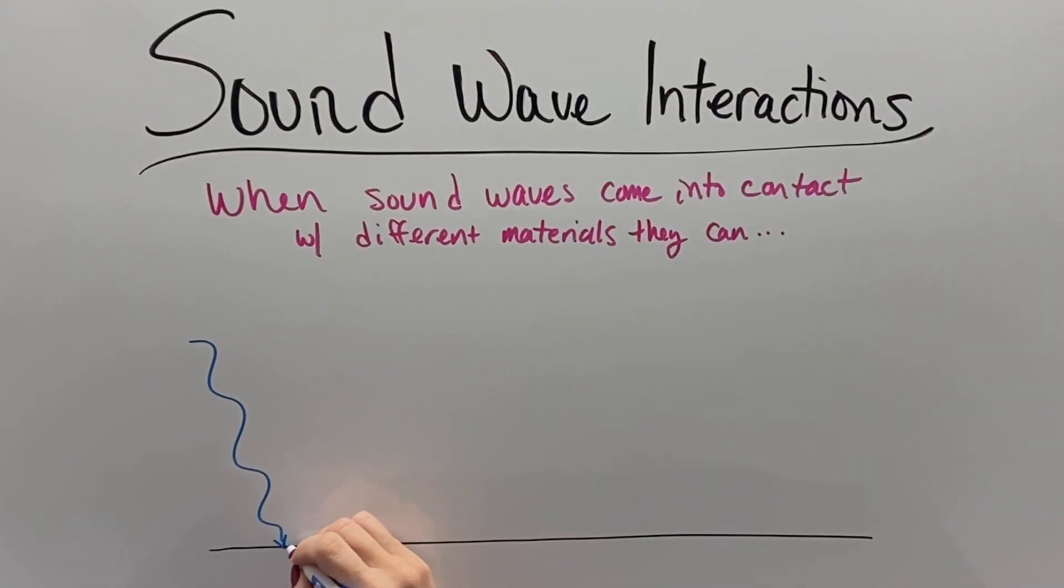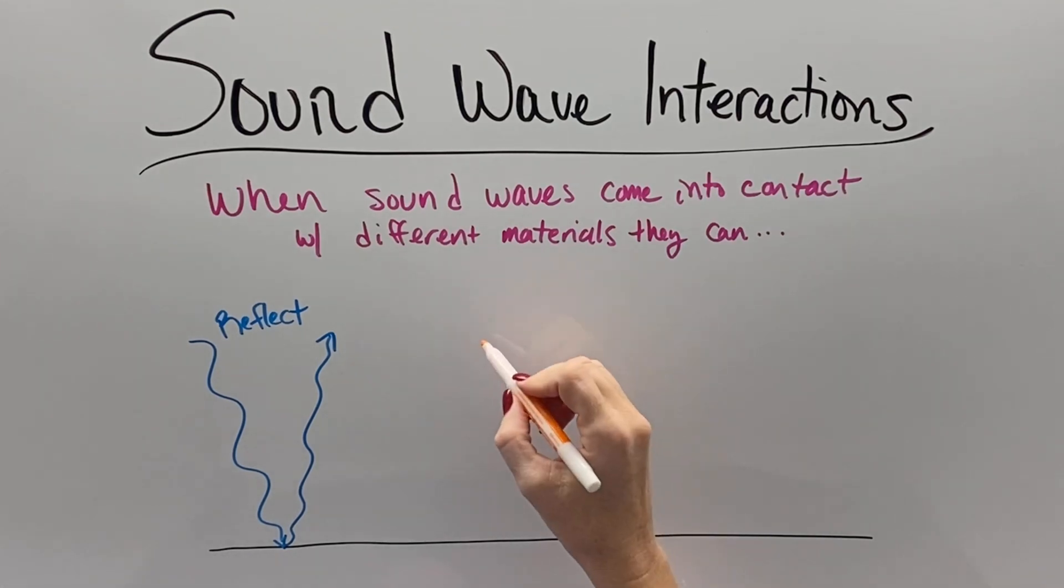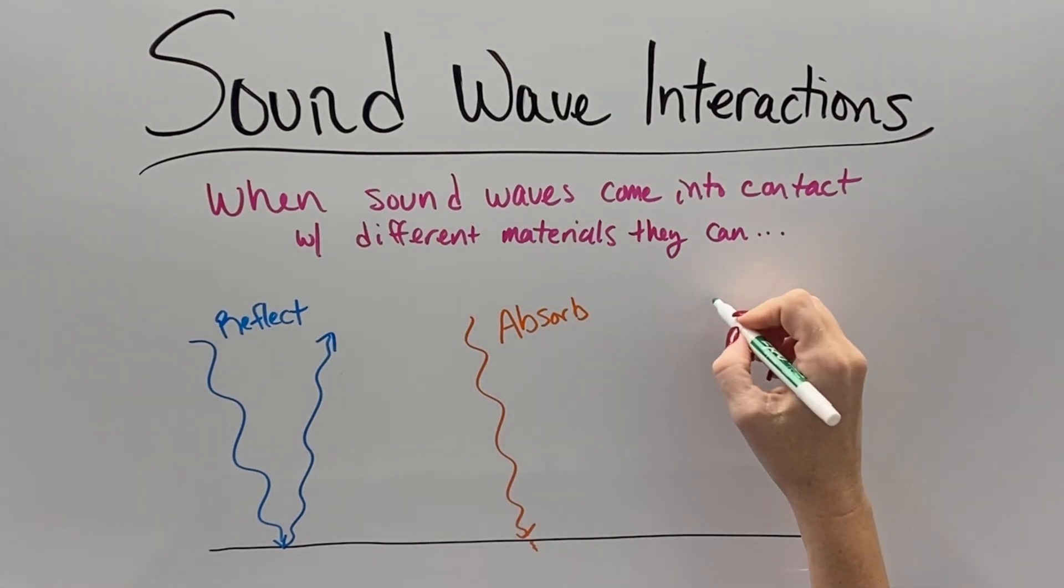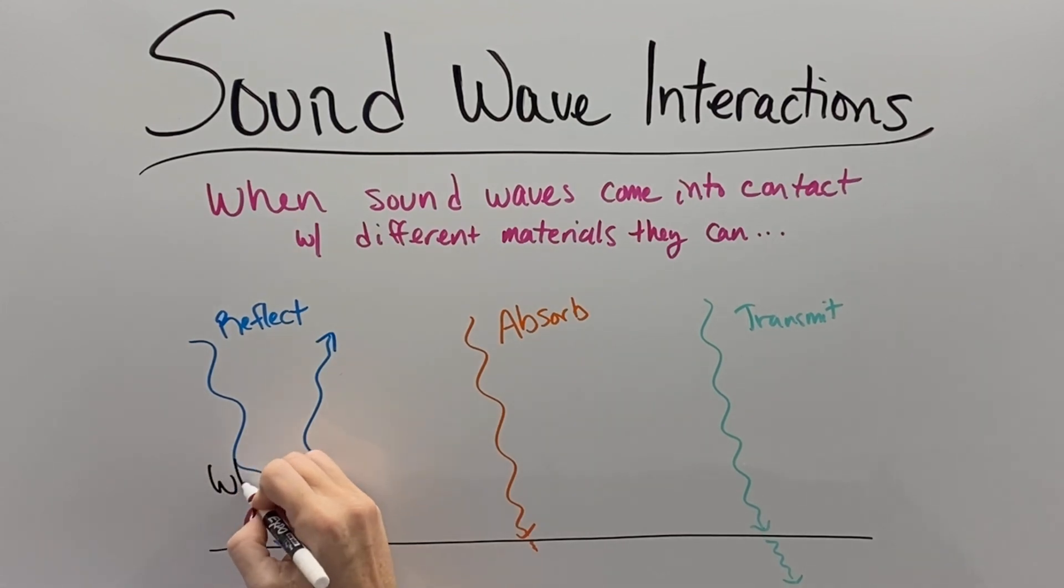Sound waves travel through different substances differently, which means that when they transition from one substance to another substance, they often change their behavior. Sometimes the sound waves will reflect off of the surface of something or bounce back where it came from. Sometimes the sound will be absorbed by the substance, and then sound can also transmit through the substance, similar to the way it was already traveling.